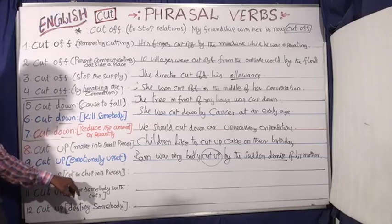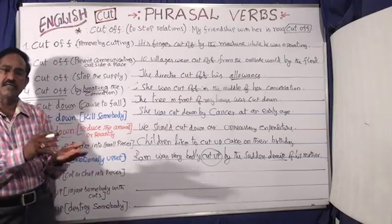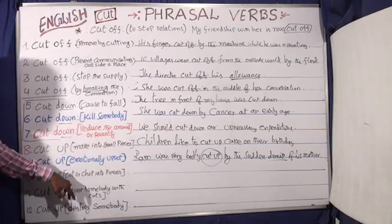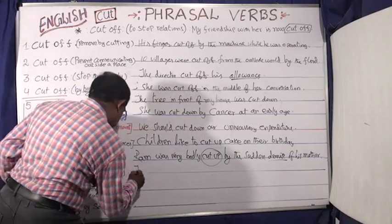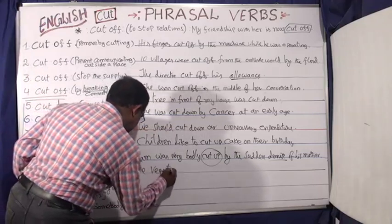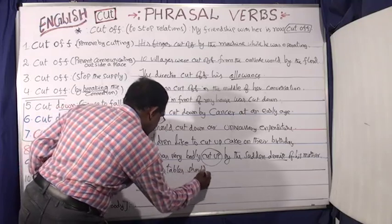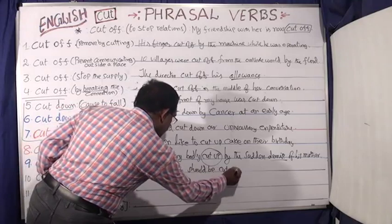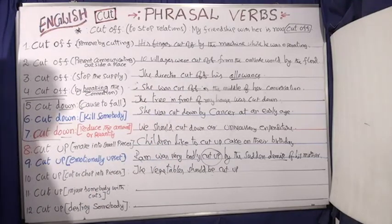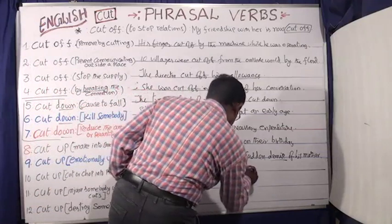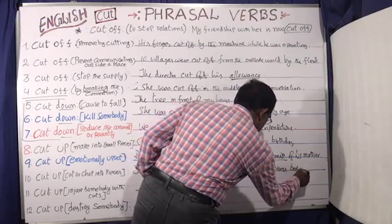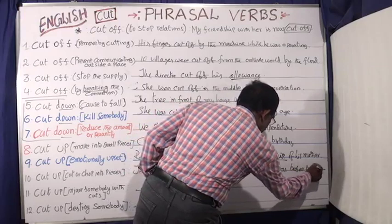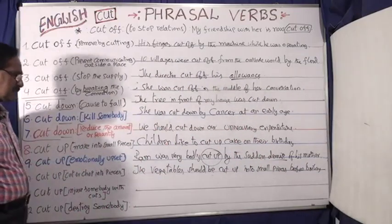'Cut up' can also mean to chop into pieces. The vegetables should be cut up into small pieces before boiling. This is the same idea as making something into small pieces by cutting.